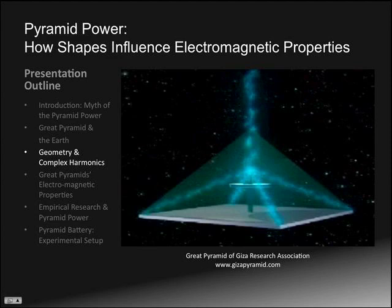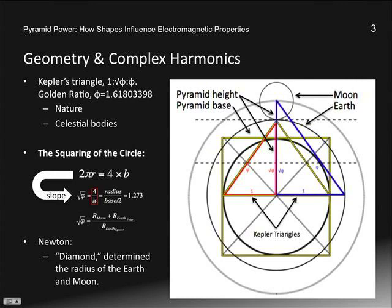Into the geometry and complex harmonics connection: Kepler's triangle has a base of one, a height of square root phi, and a hypotenuse of phi. Phi is the golden ratio, the Fibonacci number. Johannes Kepler determined that this triangle permeates throughout nature and could be used to determine the geometry of celestial bodies in a platonic solid Copernican model of the universe.